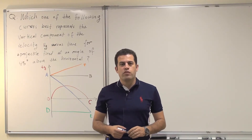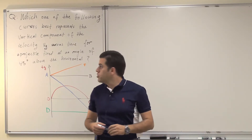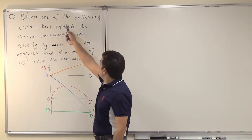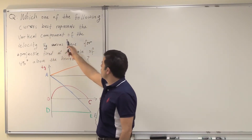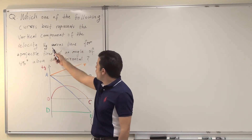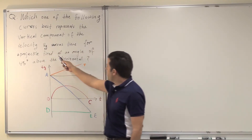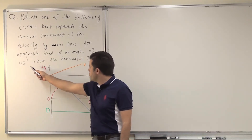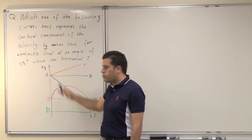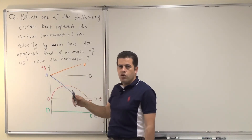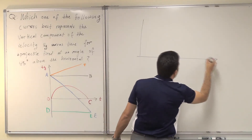As-salamu alaykum. Today we're solving questions from chapter 4, this question about projectile motion. It reads: which one of the following curves best represents the vertical component of the velocity Vy versus time for a projectile fired at an angle of 45 degrees above the horizontal? To solve this question, before we compare these curves, we can go back to the principle of projectile motion in two dimensions.